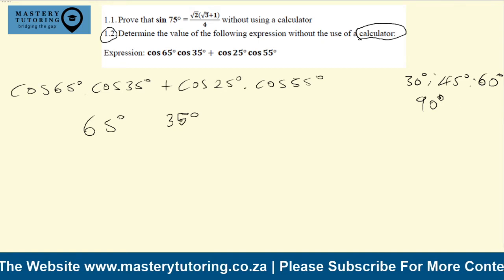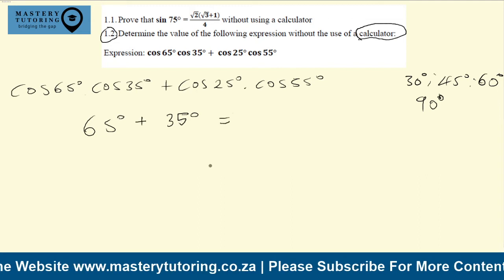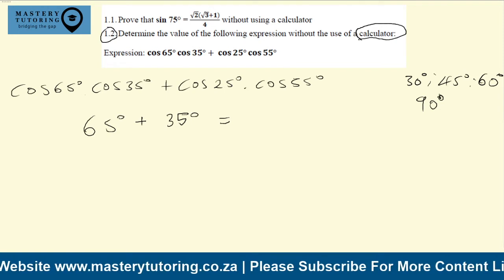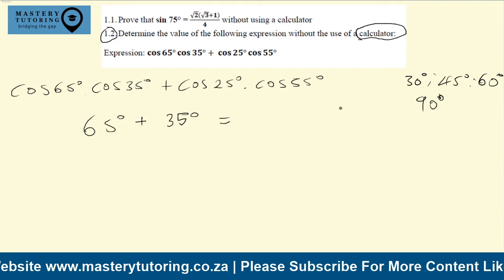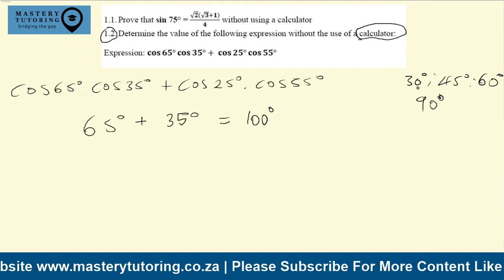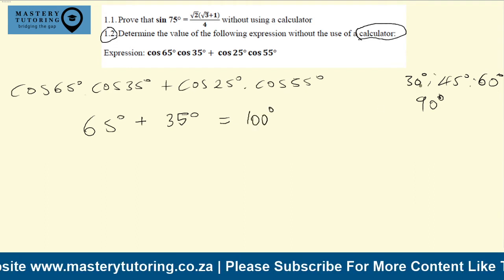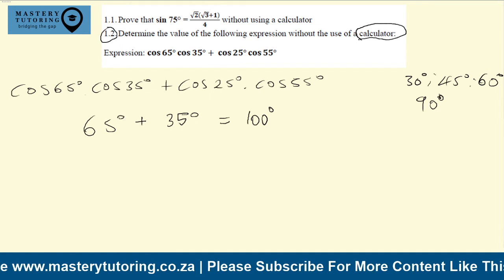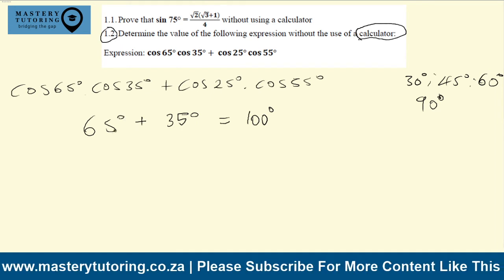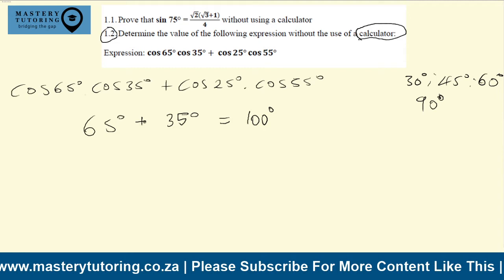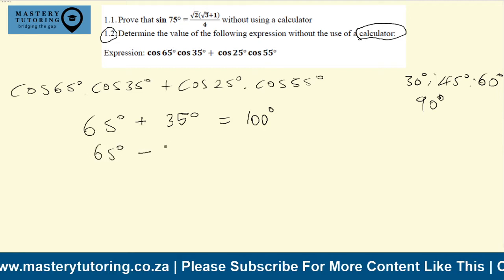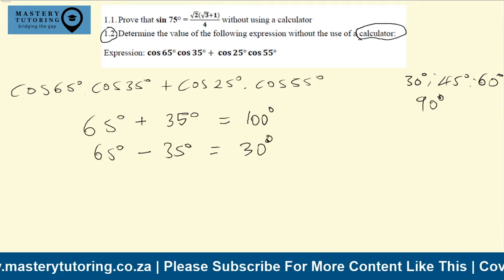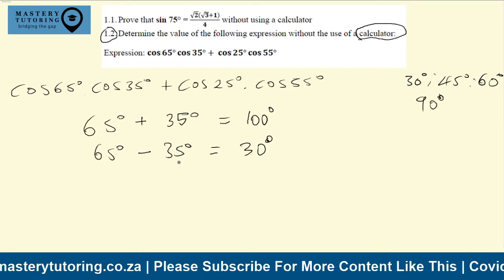Let me check: 65° + 35° = 100°, which is not a special angle, so I can't use the sum. But 65° − 35° = 30°, which is a special angle. So I'll go with the difference. Since we'll be using a minus, and the expression has a plus, this is consistent with the cosine compound angle formula.